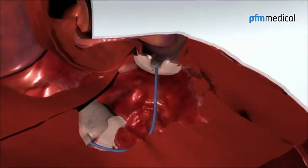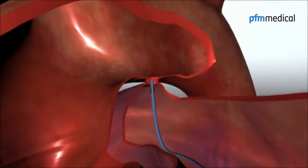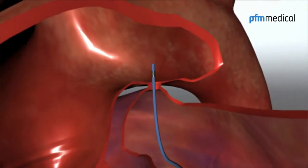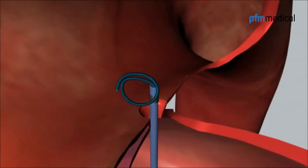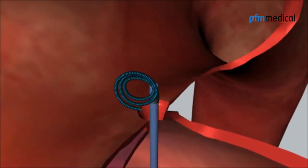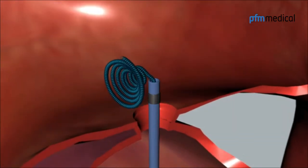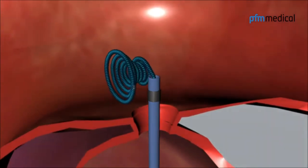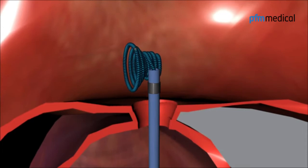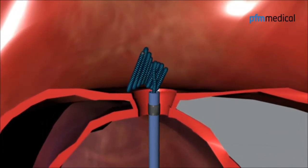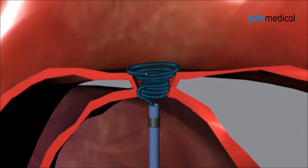The implantation catheter is advanced from the pulmonary artery, through the defect and placed in the descending aorta. The coil is advanced to the distal end of the implantation sheath. All but one loop is configured outside the implantation catheter. The entire system is retracted until the configured coil is positioned in the ampulla of the ductus.